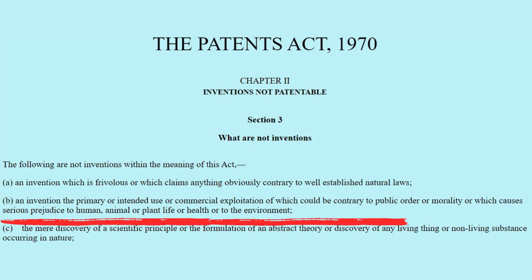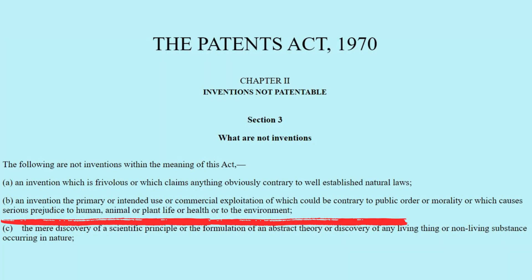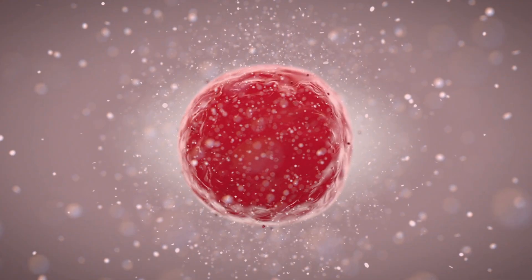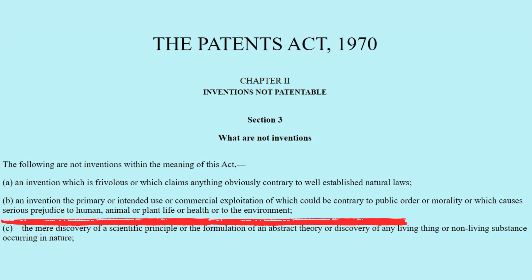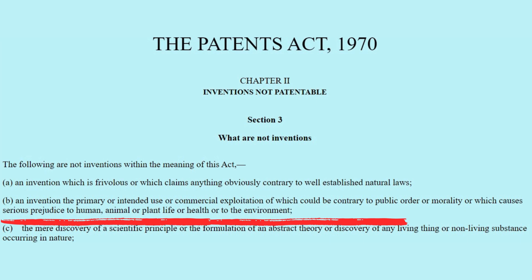Coming to Section 3B of the Indian Patents Act, it states that an invention whose primary or intended use or commercial exploitation could be contrary to public order or morality, or which causes serious prejudice to human, animal, or plant life or health or to the environment, is non-patentable. The classic example is the Oncomouse — a mouse genetically modified by researchers at Harvard Medical School in the early 1980s by introducing an oncogene that can trigger the growth of tumors, so that this mouse can be used as a model for medical research. This raised ethical issues. Although the patent was granted in the U.S., it could not make it in countries like Canada and India.